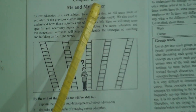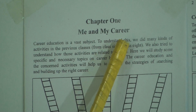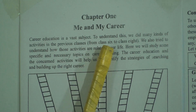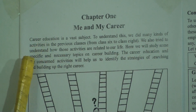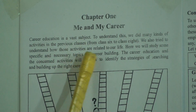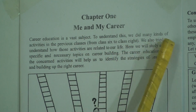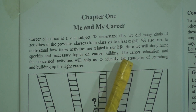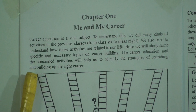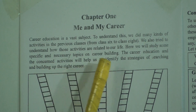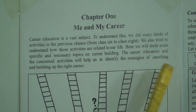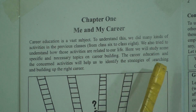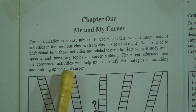Chapter 1 is about me and my career. Career education is a vast subject. To understand this, we did many kinds of activities in the previous classes, from class 6 to class 8, and we also tried to understand how those activities are related to our life. Here we will study some specific and necessary topics on career building. The career education and the concerned activities will help us to identify the strategies of searching and building up the right career.